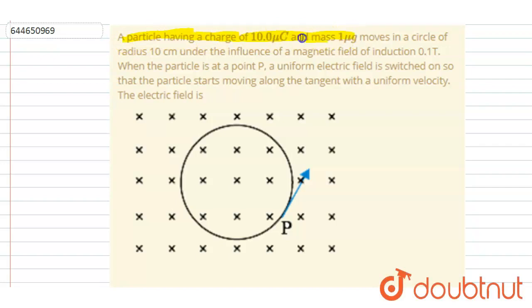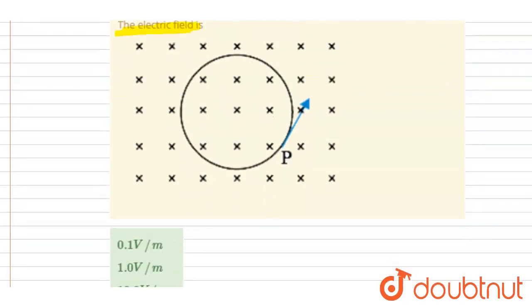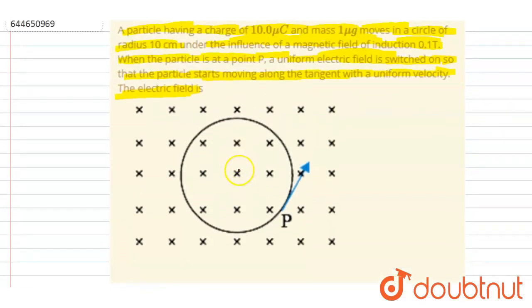...10 microcoulomb and mass 1 microgram moves in a circle of radius 10 centimeter under the influence of magnetic field of induction 0.1 tesla. When the particle is at point P, a uniform electric field is switched on so that the particle starts moving along the tangent with uniform velocity. The electric field is...